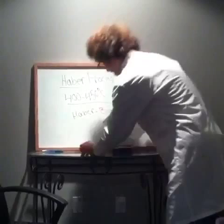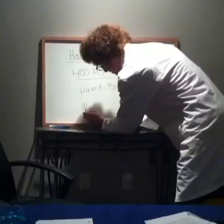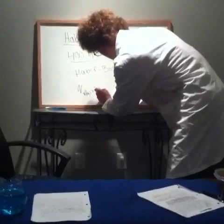Student: What's the balanced chemical equation? The balanced chemical equation for ammonia is N2, which is a gas, plus 3H2, which is also a gas.